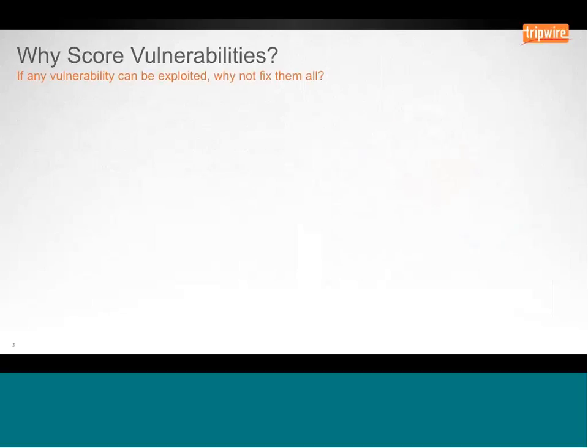So why do we score vulnerabilities? I'm sure many of you have heard this before: why not fix everything? It's a misconception that there's just a magic button you can push and suddenly a system is completely up to date with no need to worry about patching anything further. We all know that's not the case. The main reason to score a vulnerability is for prioritization — should I apply patch A or patch B? Which one is more important? There are both objective and subjective ways to come to that conclusion, and we're going to talk about how to make it as objective as possible.